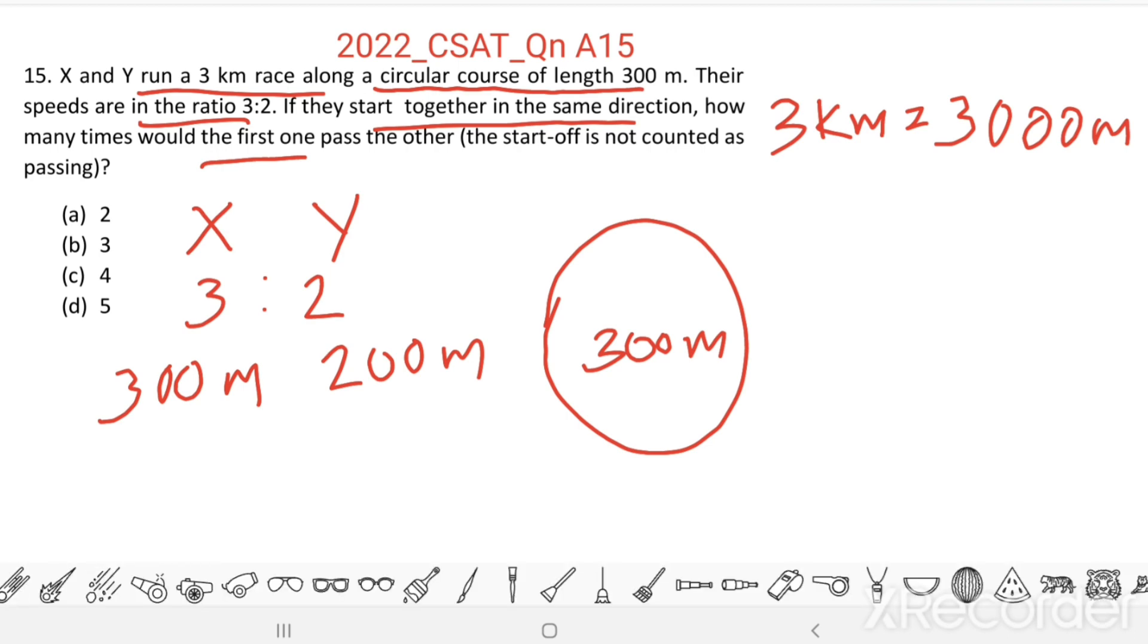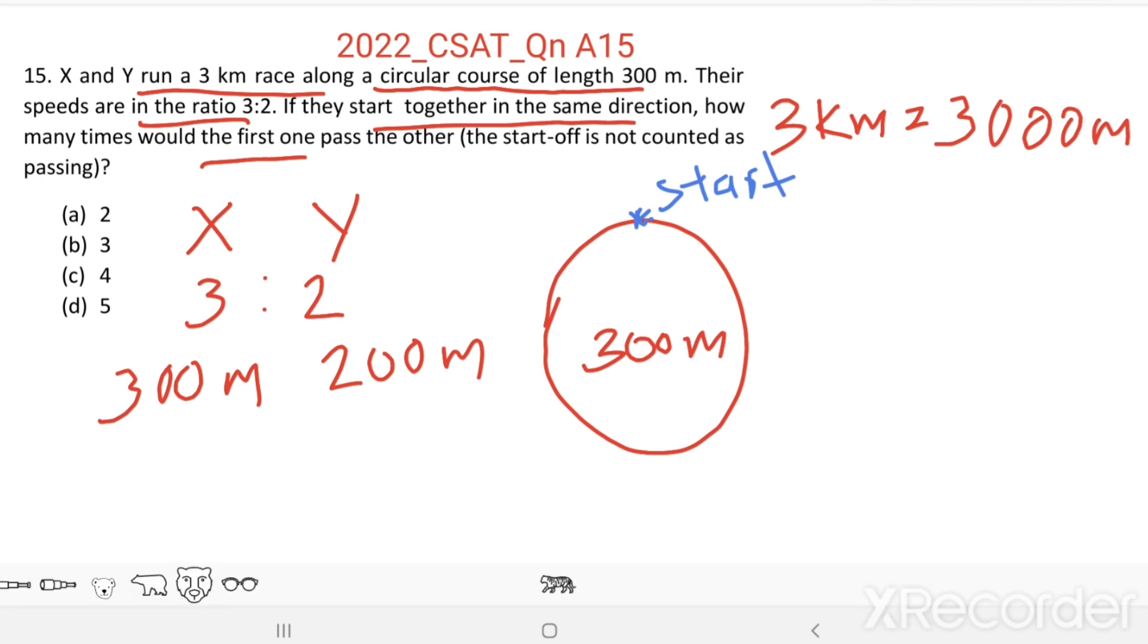Suppose this is the starting point. Both of them start from here together in the same direction. How many times does the first one pass the other? The start at the beginning is not counted as passing.